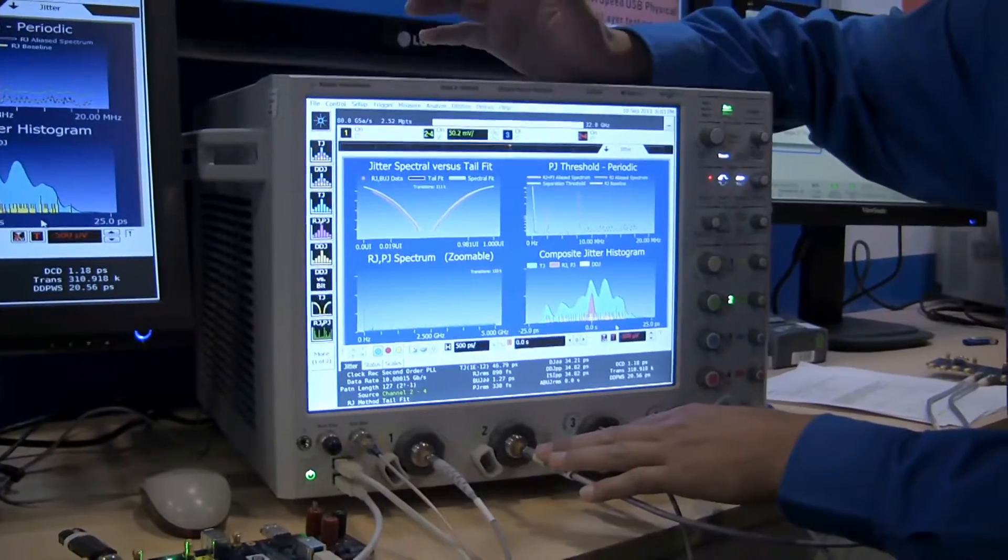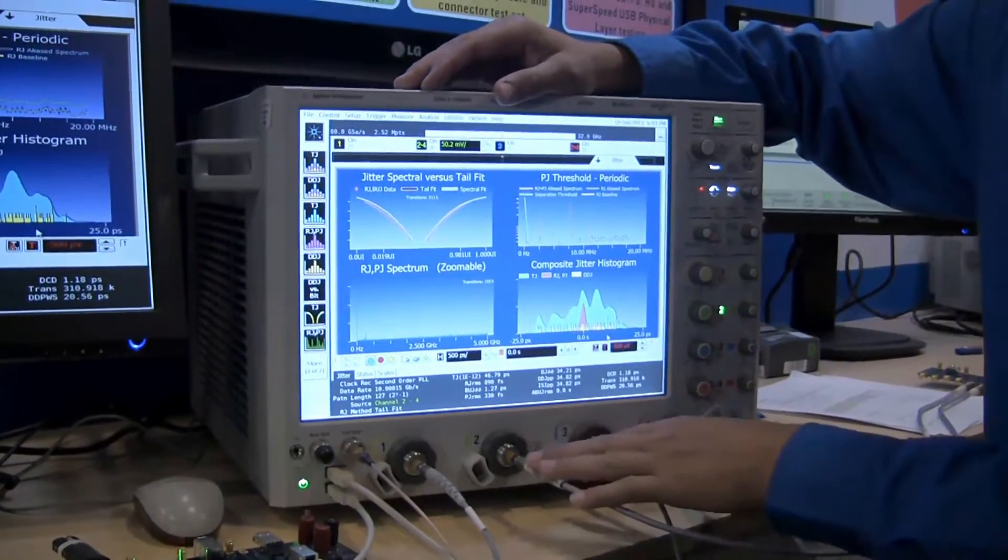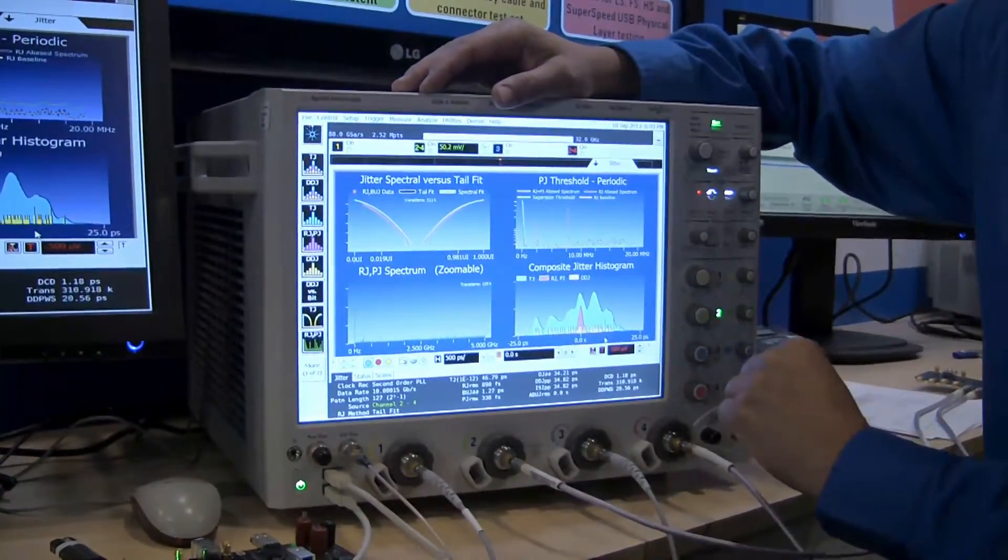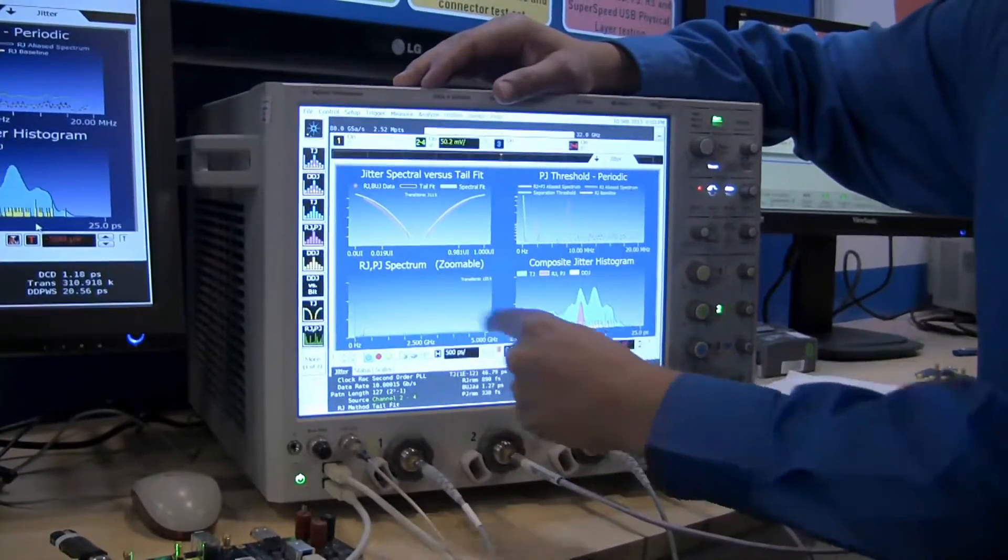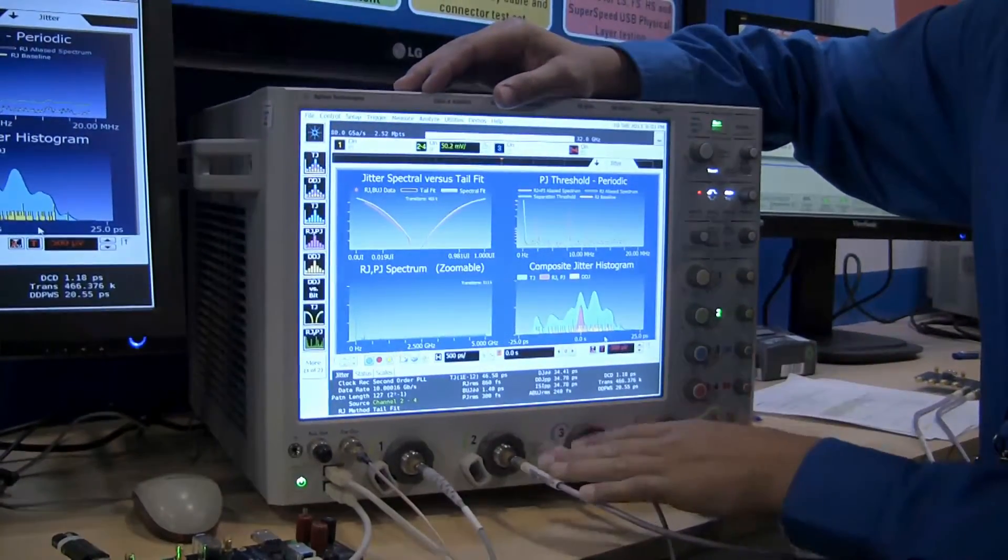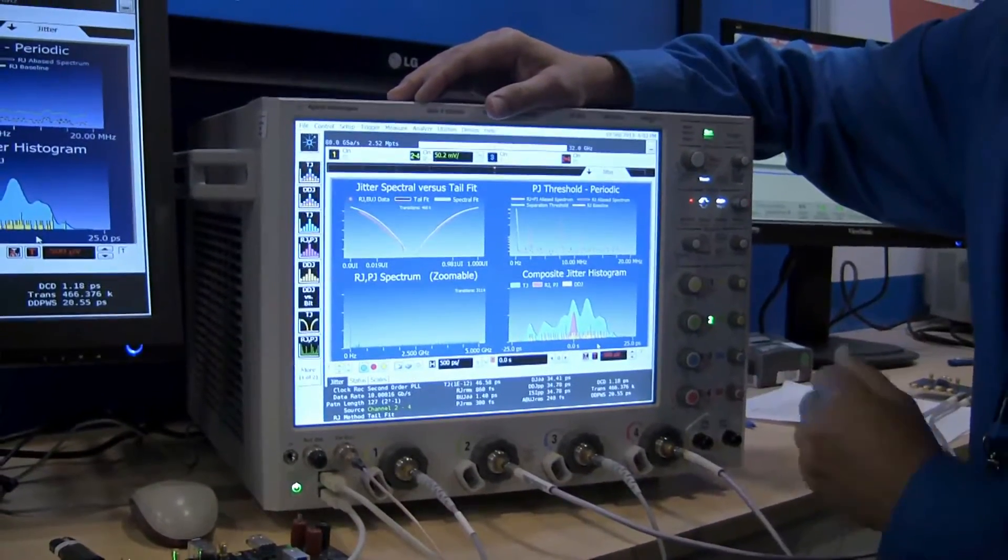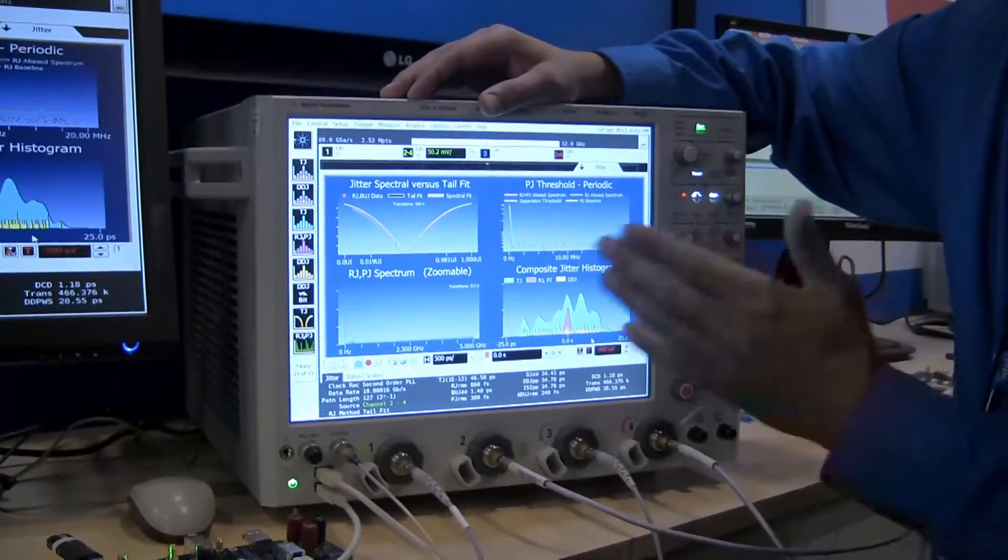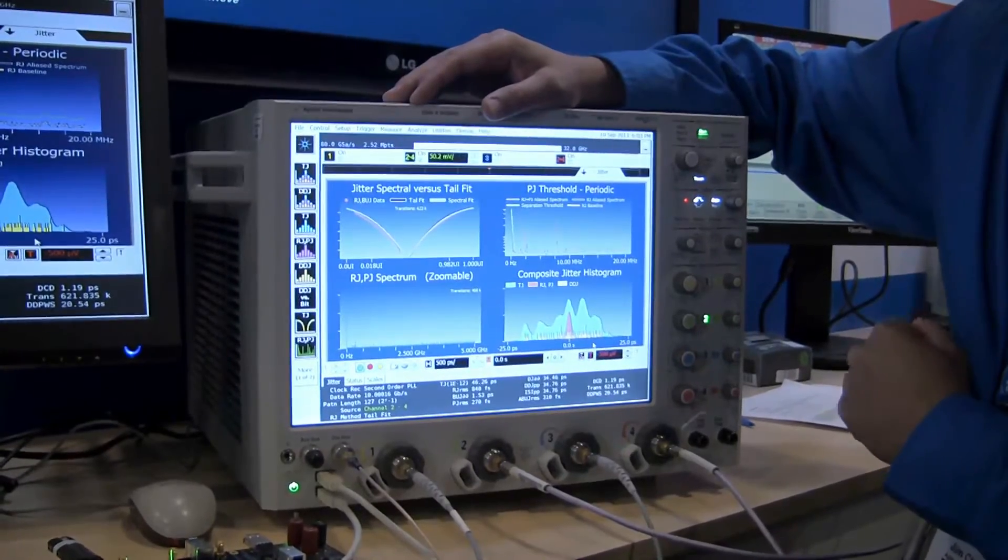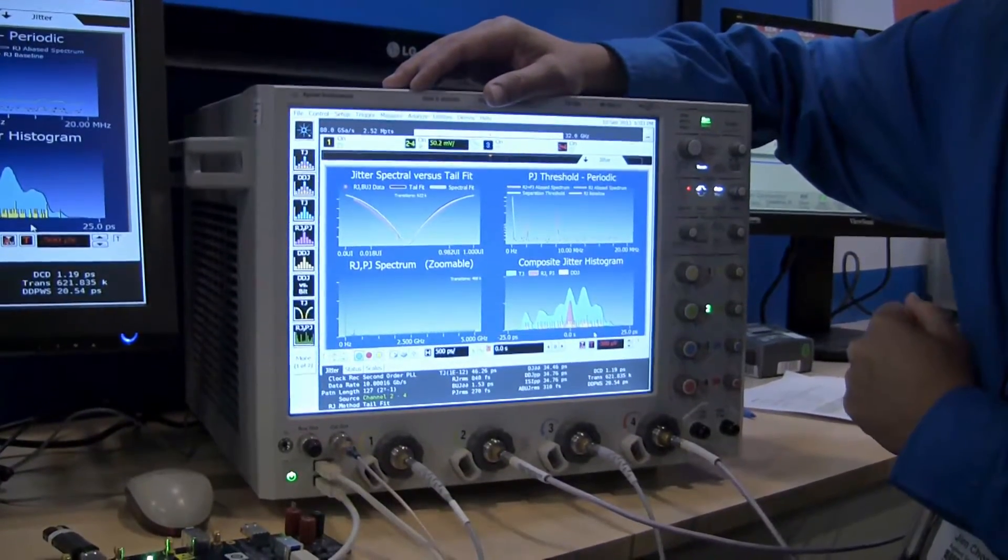So when you test a USB 3 transceiver, first step you test the transmitter outputs directly using this system software to analyze your RJ and PJ spectrogram. And then you would also hook up your bit error rate tester to calibrate the signal that's going to go into the receiver to try to break it at the required test points for jitter compliance and receiver jitter tolerance testing.